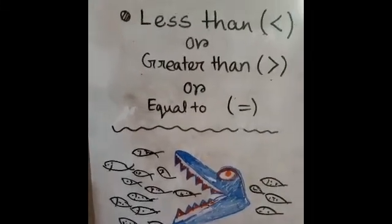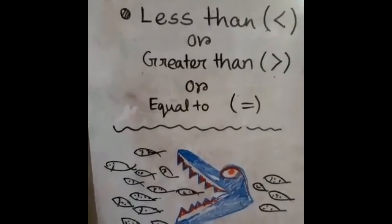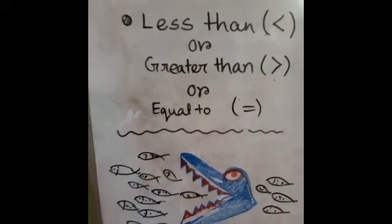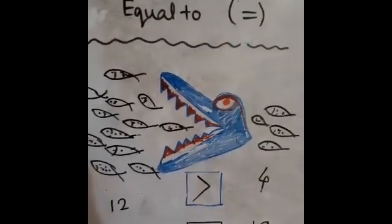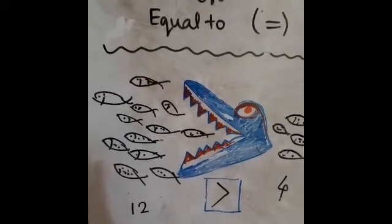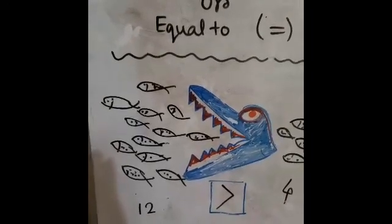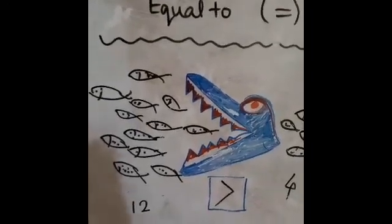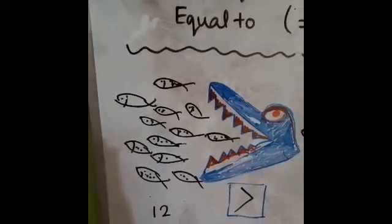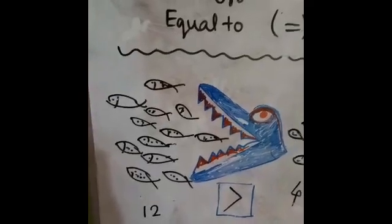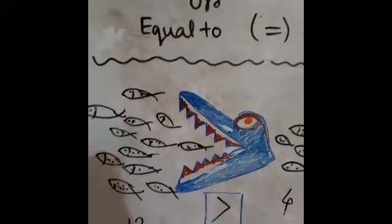We can use these signs for less than and greater than. Let us check how to use this symbol. Here are two numbers: 12 and 4. As 12 is the bigger number, the opened mouth should be towards 12. That is why 12 is greater than 4 — we place the greater than sign here.